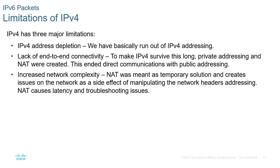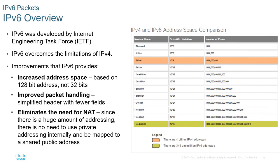IPv6 actually allows for end-to-end communication without the use of NAT. Why? Because IPv6 has far more addresses. IPv4 has a few billion addresses, while IPv6 has a few undecillion addresses. There are three undecillion grains of sand on our planet, and IPv6 allows for 340 undecillion addresses — just to give you scope of how large an undecillion number is. IPv6 has vastly more addresses than IPv4.